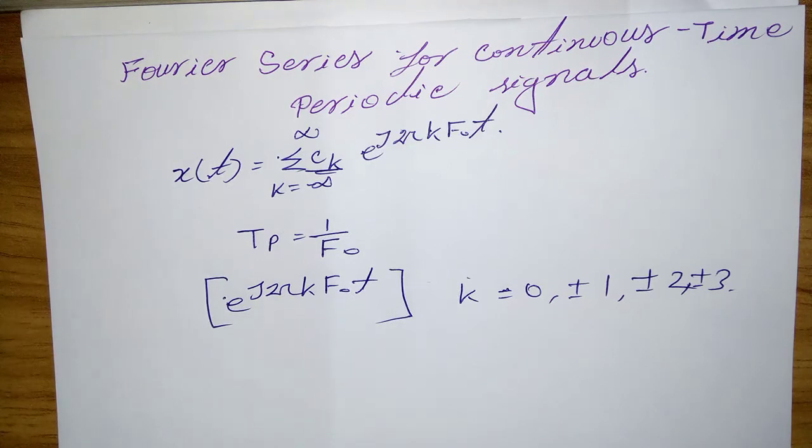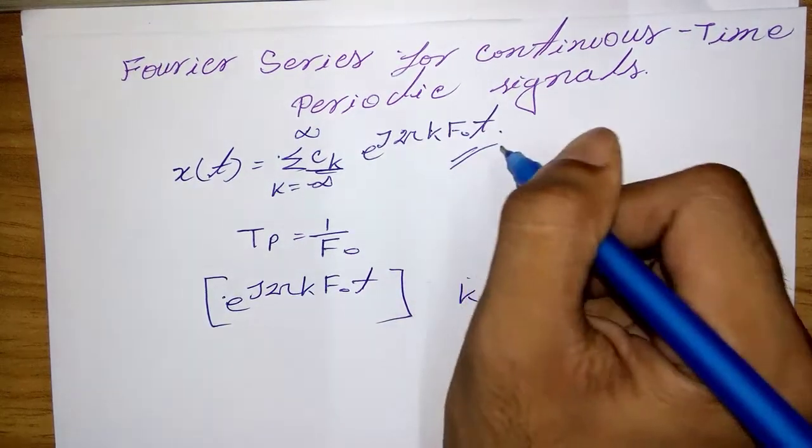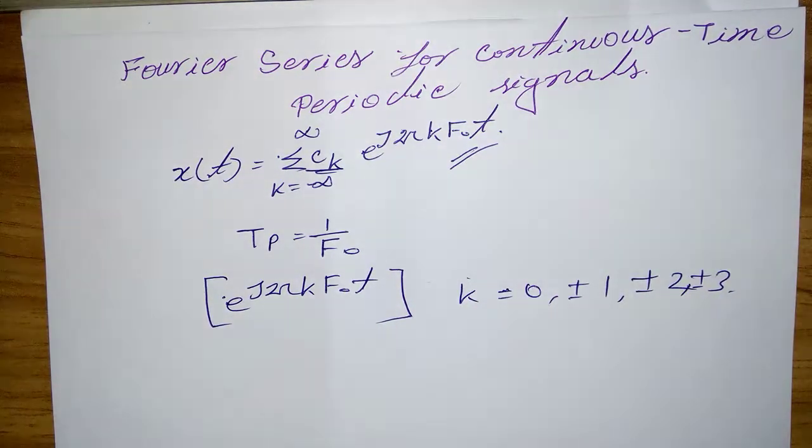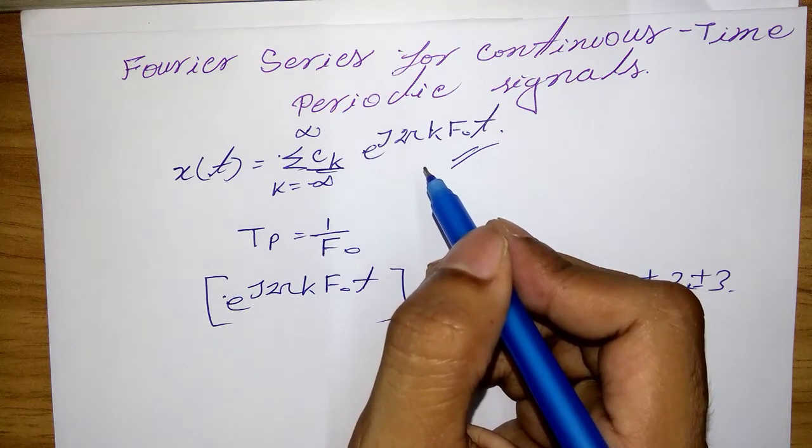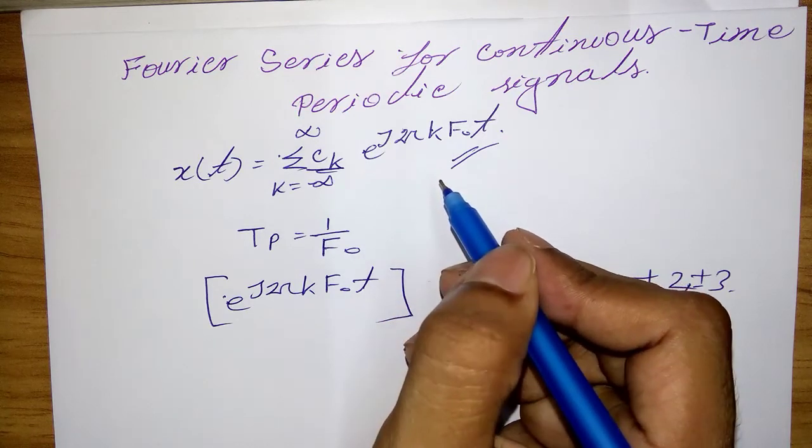Suppose we are given a periodic signal x(t) with period T_p. We can represent this periodic signal by the Fourier series, where the fundamental frequency f₀ is selected to be the reciprocal of the given period T_p.